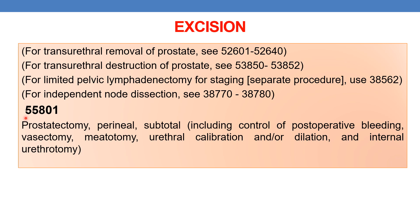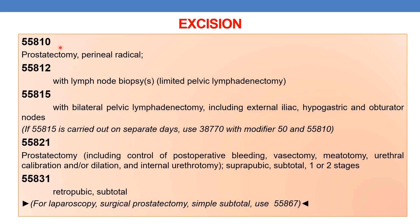Coming to the CPT for excision, the first CPT is 55801 — prostatectomy, perineal subtotal. It includes control of postoperative bleeding, vasectomy, meatotomy, urethral calibration and/or dilation, and internal urethrotomy. Next CPT is 55810 — prostatectomy, perineal radical. Next is 55812 — prostatectomy with lymph node biopsy, limited pelvic lymphadenectomy. Next is 55815 — prostatectomy with bilateral pelvic lymphadenectomy including external iliac, hypogastric, and obturator nodes.